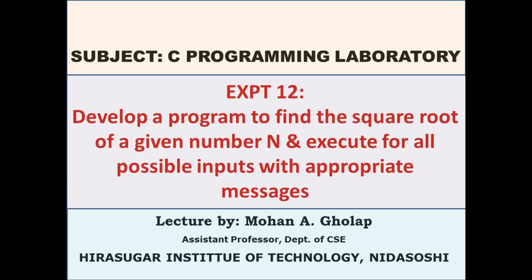Let us discuss Experiment 12 from the C Programming Laboratory. The aim of this experiment is to develop a program to find the square root of a given number n and execute it for all possible inputs with appropriate messages. Note that we should not use any built-in library functions.